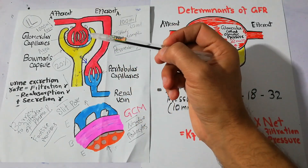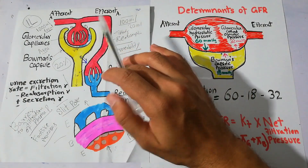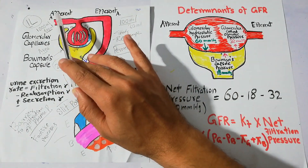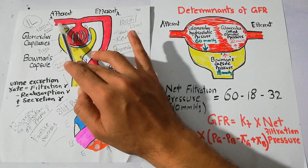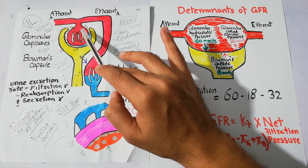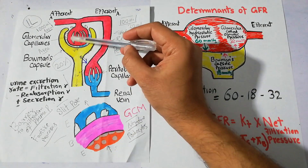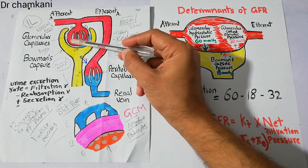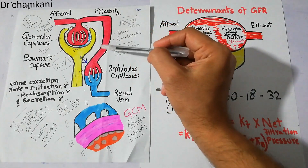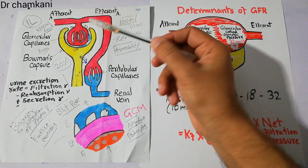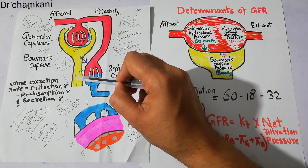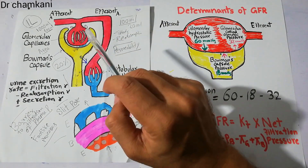Inside the kidney there are thousands of nephrons. Each nephron receives blood through the afferent arteriole, which brings blood into the glomerulus — a bunch of capillaries in which pressure is generated. Due to high pressure, fluid in the blood moves out into the Bowman's capsule. The remaining blood goes into the efferent arteriole, then into the peritubular capillaries, where some substances are reabsorbed and some are secreted into the nephron tubules.